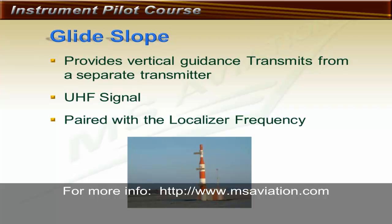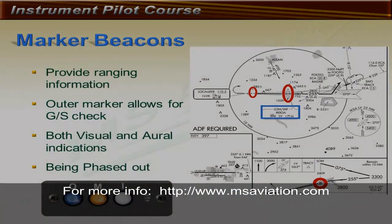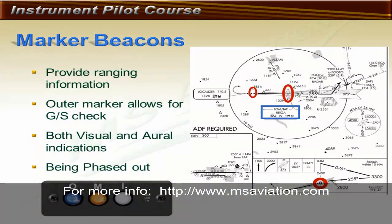The glide slope frequency is not displayed to the pilot. Marker beacons are transmitters that emit a vertical signal that is very tightly confined, and are used to provide the pilot with range information to the airport. The image on the slide depicts marker beacons as shown on an actual instrument approach procedure. In this example, we have an outer and a middle marker.